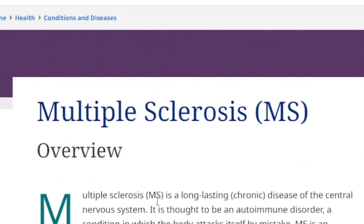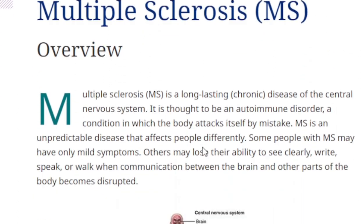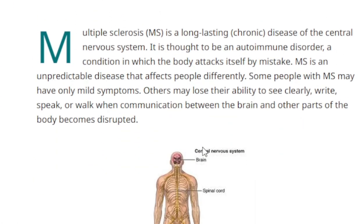We're going to look at Johns Hopkins Medicine, who does a really good overview of what multiple sclerosis is. Multiple sclerosis, MS, is a long-lasting chronic disease of the central nervous system. It is thought to be an autoimmune disorder — a condition in which the body attacks itself by mistake. MS is an unpredictable disease that affects people differently.